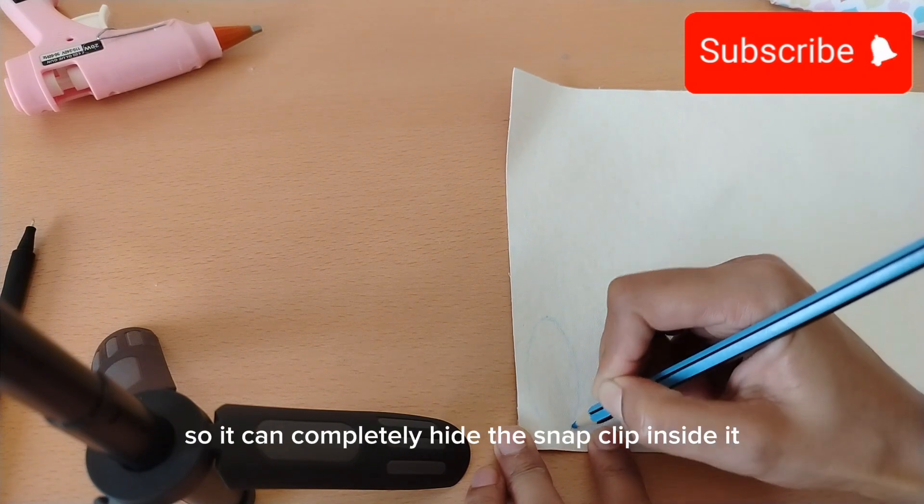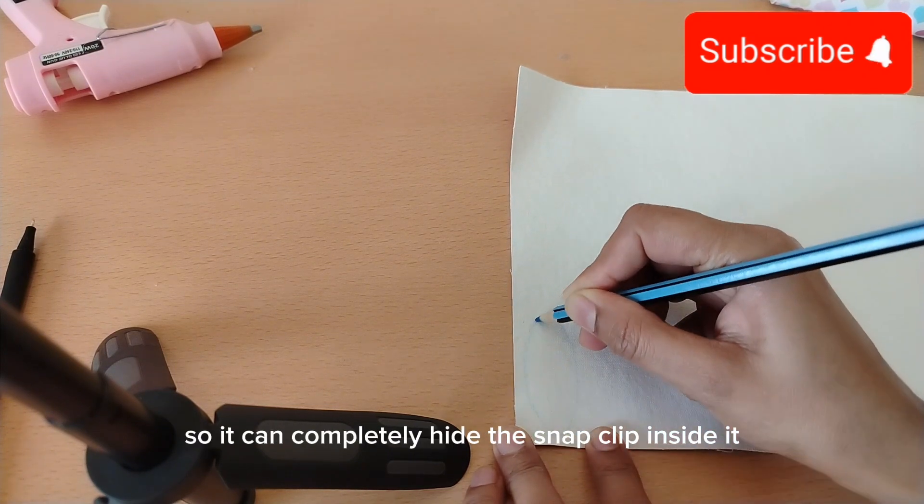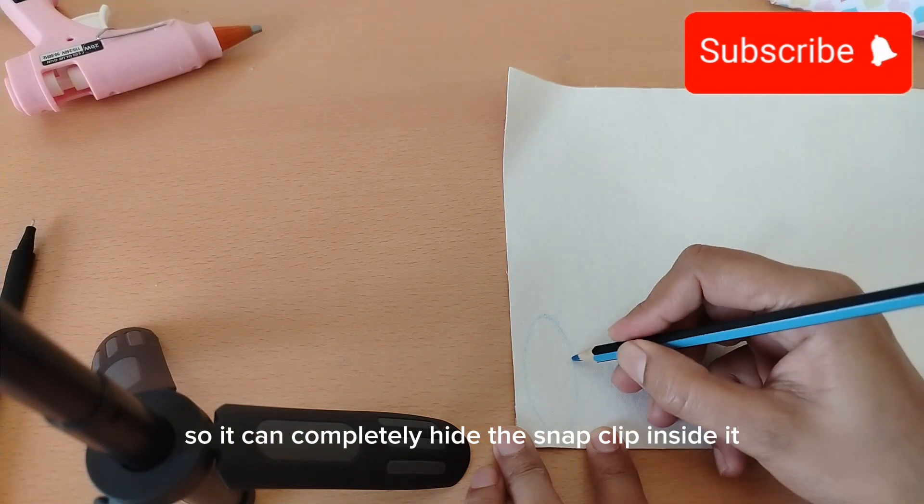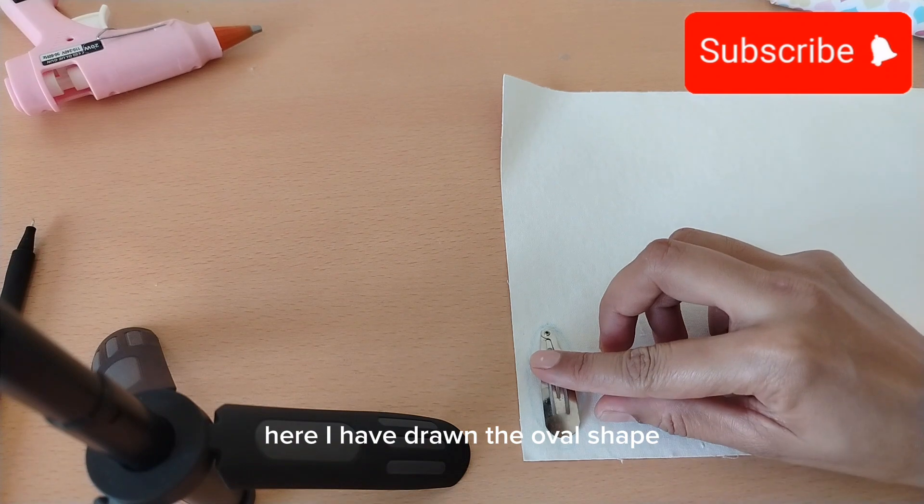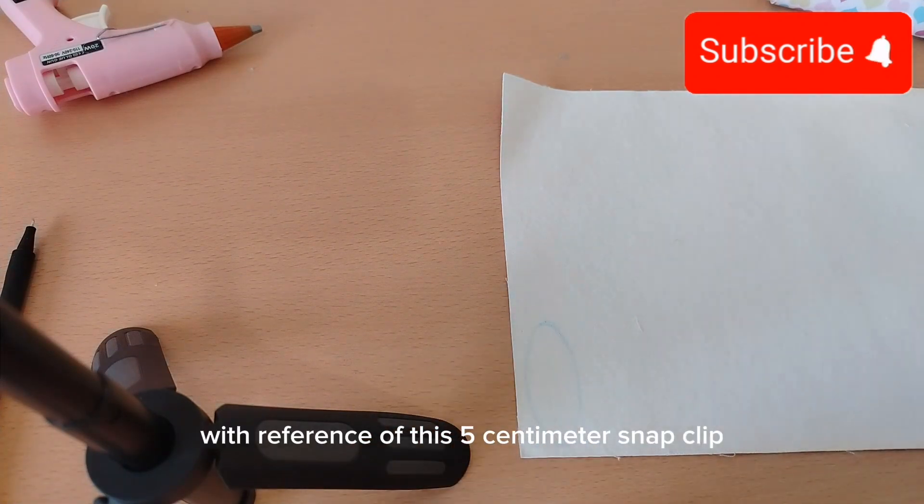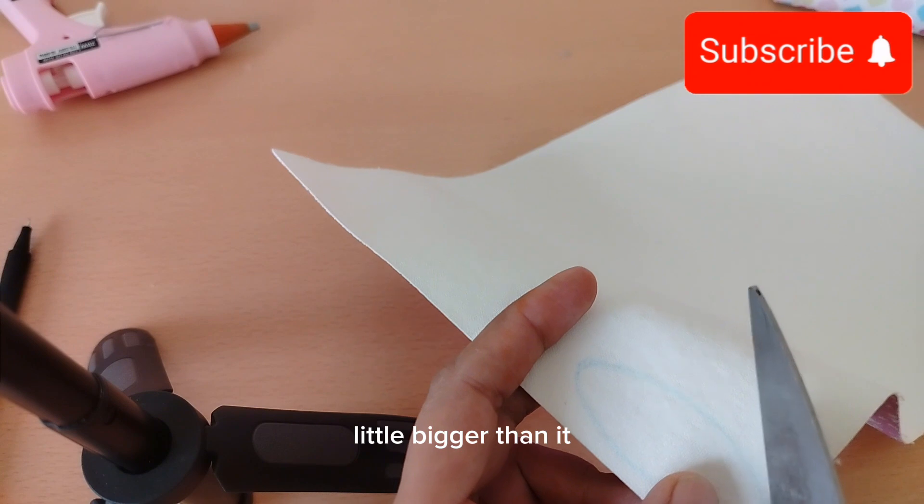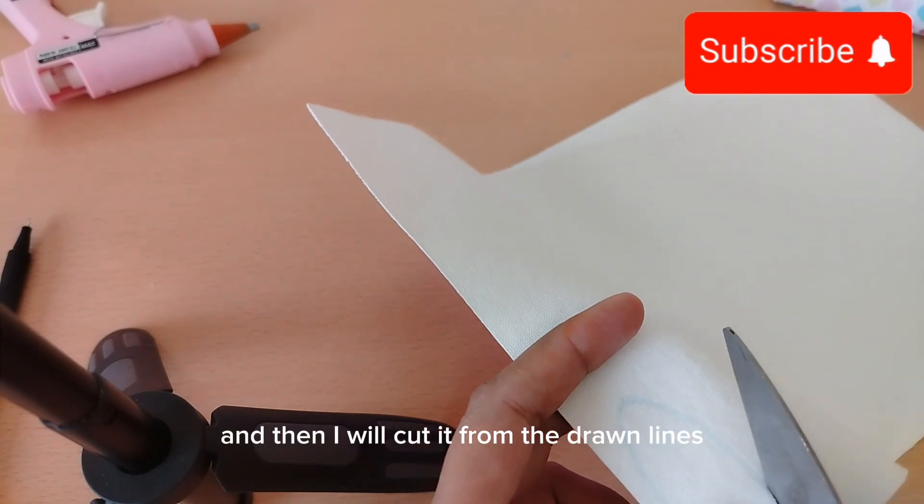Here I have drawn the oval shape with reference to this 5-centimeter snap clip, a little bigger than it, and then I will cut it from the drawn lines.